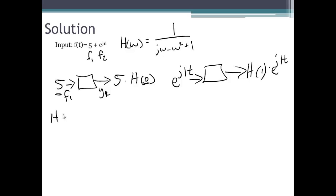So let's find h of 0. That will be 1 over 0 minus 0 plus 1, or just 1 over j. That can simplify to negative j. We'll put this in its exponential form, which will give us e to the negative j 90 degrees.